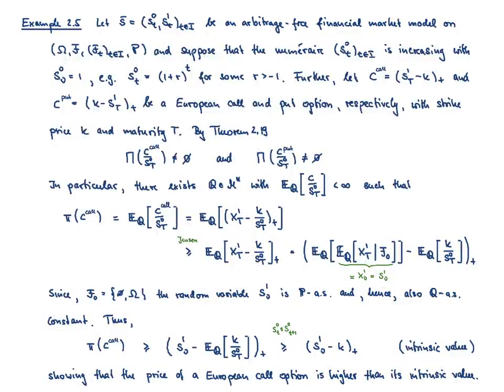After we have characterized the set of all discounted arbitrage-free prices, let us now come to a couple of examples. So this first example is the following.